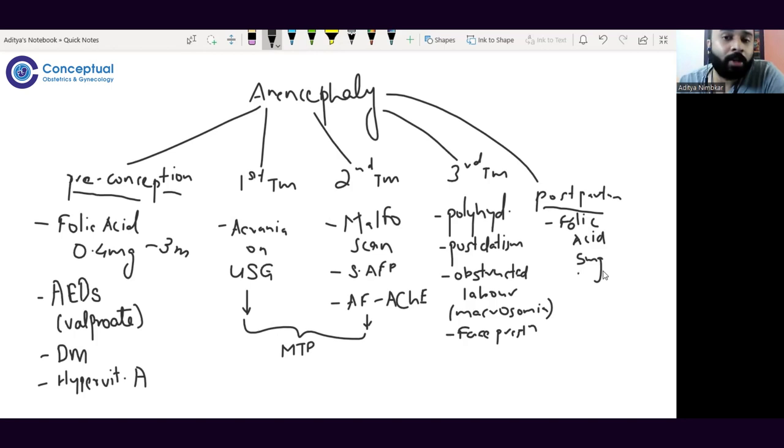Another risk factor in the preconceptional period is consumption of anti-epileptic drugs. The most important one is valproic acid or valproate. It's known to ensure epilepsy-free intervals for longer duration than many other drugs, but it is not safe for patients willing to conceive and should be changed prior to pregnancy.